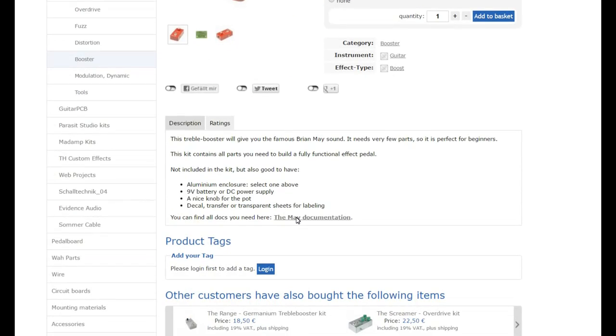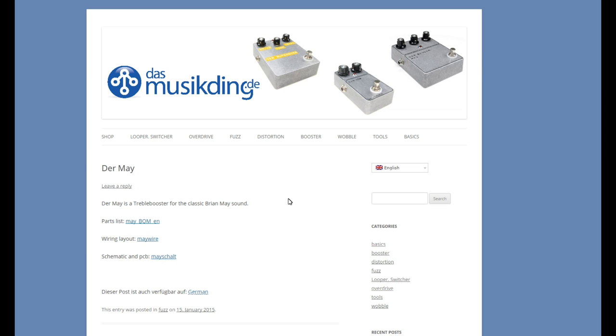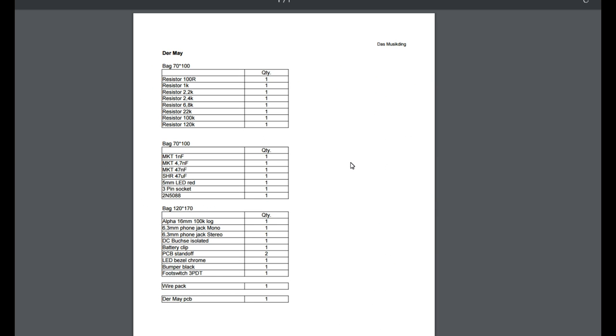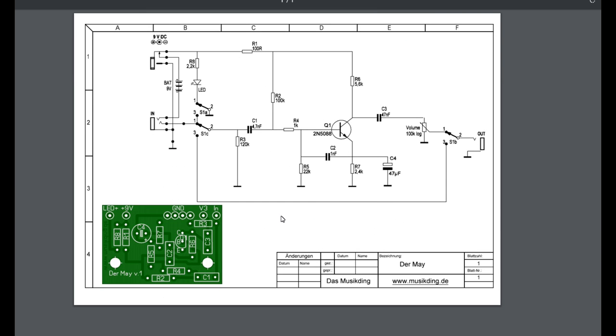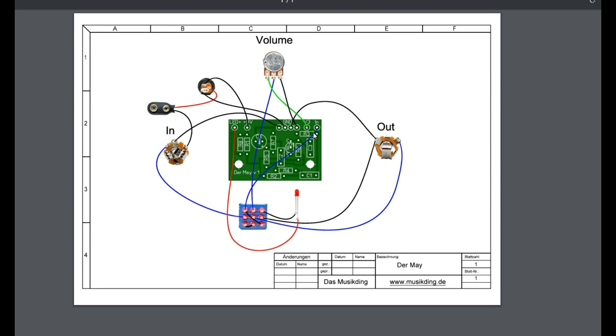There are three documents related to this treble booster kit. Number one an inventory list summarizing all components. Number two a wiring schematic. And number three a documentation detailing the connection of the jacks, LED and power input.